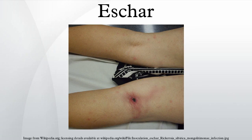An escharotic is a substance that causes tissue to die and slough off. Examples include acids, alkalis, carbon dioxide, metallic salts and sanguinarine, as well as certain medicines like imiquimod.